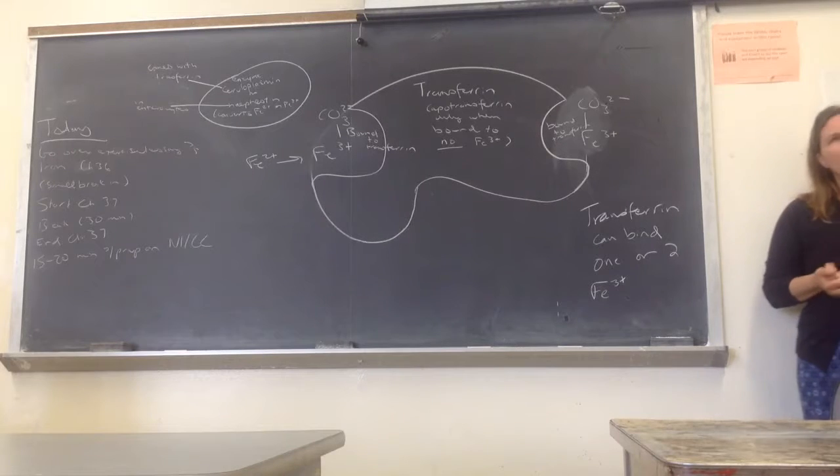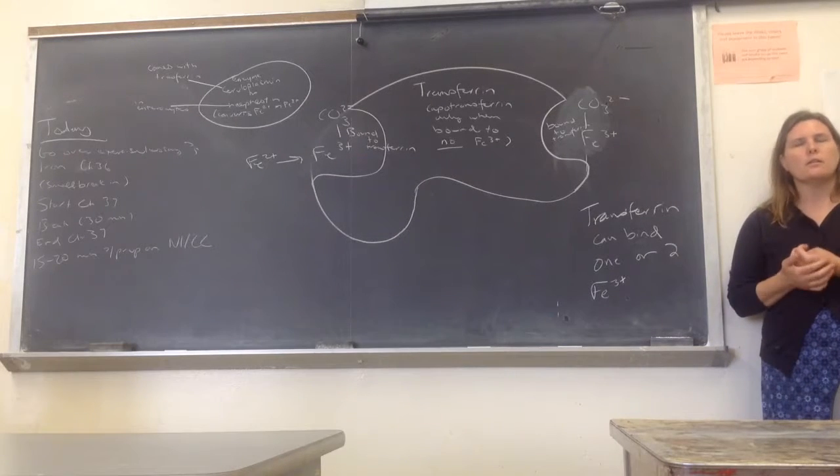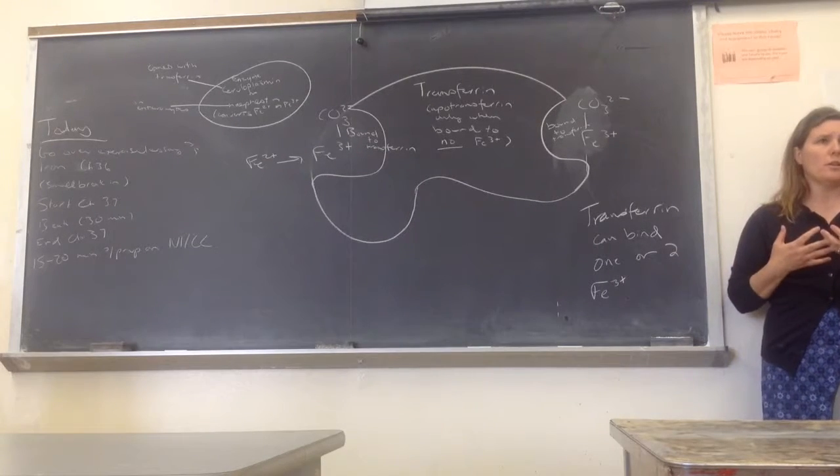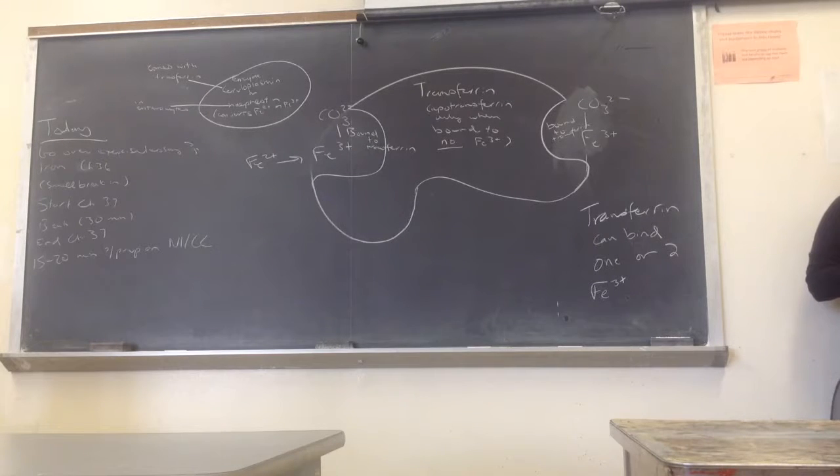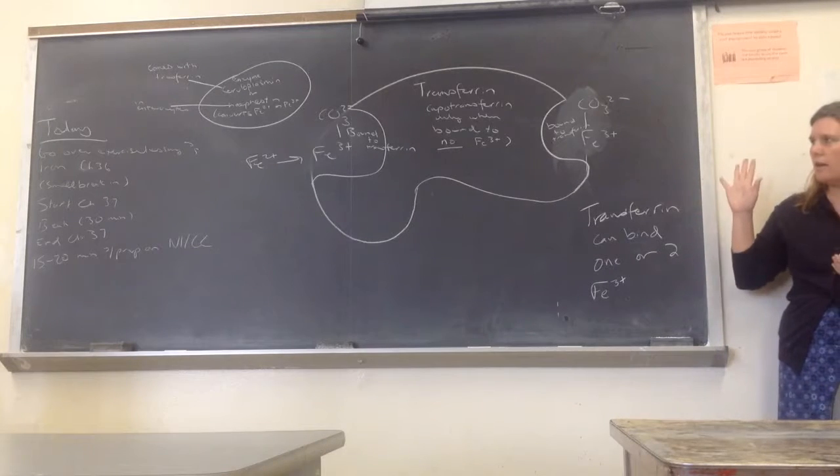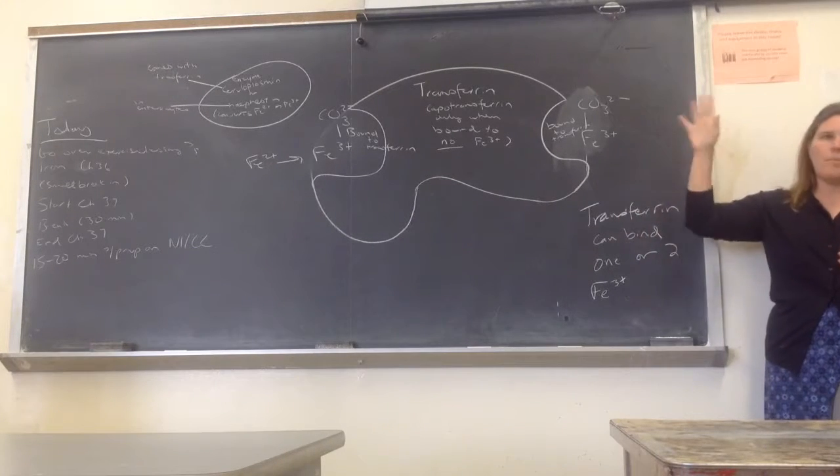Transferrin has sequestered the iron so that it does not cause damage to any cells as it travels through the bloodstream, and it can take it to other cells that have transferrin receptors. Are there any questions on what has to happen here?